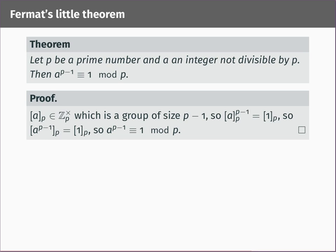The statement of this theorem has nothing to do with group theory on its face. However, we can turn it into a problem in group theory by thinking about the equivalence class of a modulo p. Since a is not divisible by p, this equivalence class is not the zero class mod p, so it's an element of the multiplicative group mod p. Recall that ℤₚˣ is the set of all equivalence classes mod p except the class of zero. Since the class of a is not the class of zero, it belongs to ℤₚˣ. This group has size p minus 1, so by our corollary, the class of a raised to the power p minus 1 gives the identity element — which is the class of 1 modulo p.